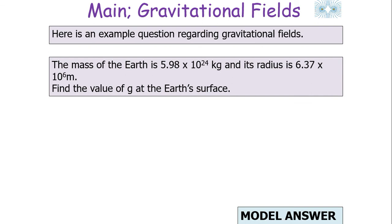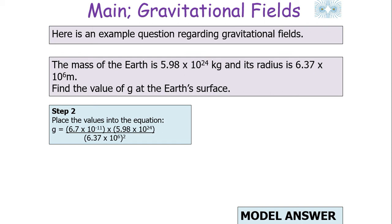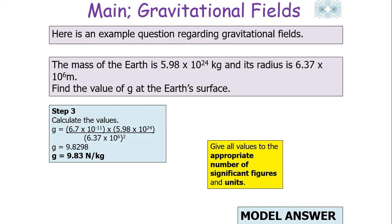For a worked example: if the mass of the Earth is 5.98 × 10²⁴ kg and its radius is 6.37 × 10⁶ m, what is g at the surface of the Earth? Step one: write the equation, g = GM/R². Step two: place values in — big G is the gravitational constant, big M is the mass of the Earth, and R is the radius from the core to the surface. Step three: calculate to get 9.83 newtons per kilogram.